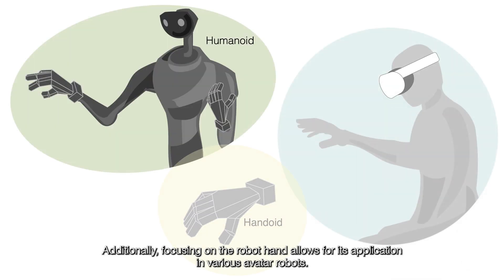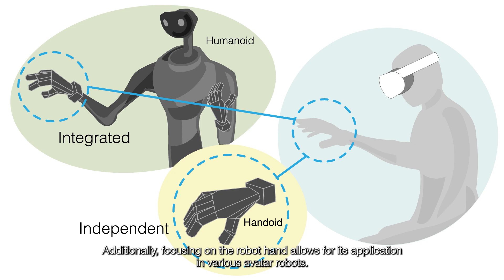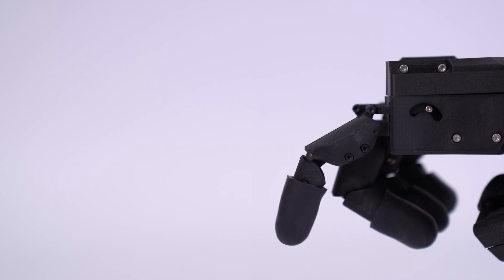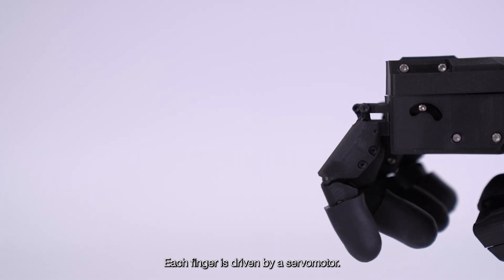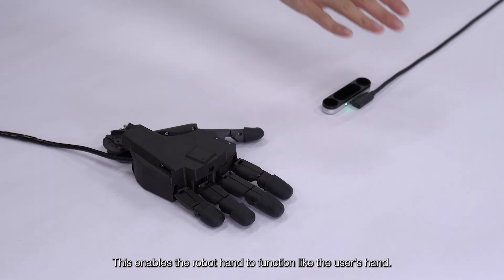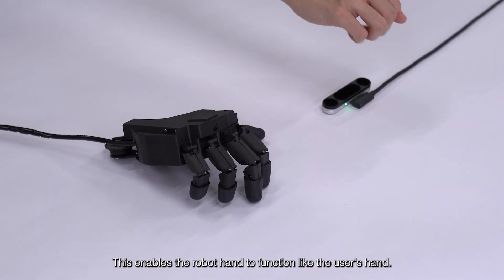Additionally, focusing on the robot hand allows for its application in various avatar robots. Our prototype uses a robot hand with six degrees of freedom. Each finger is driven by a servo motor. Another servo motor is added to the base of the thumb. This enables the robot hand to function like the user's hand.